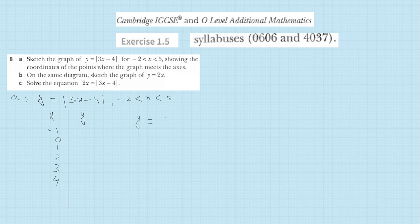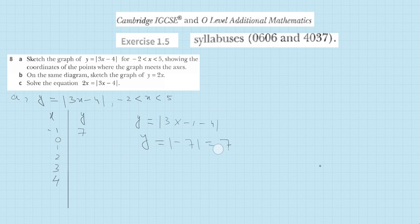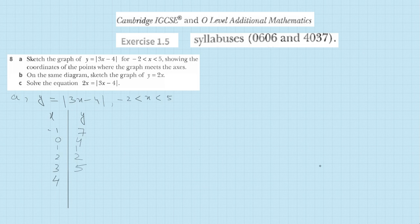First put x = −1: 3×(−1) − 4 = −3 − 4 = −7, and the absolute value of −7 is +7, so for x = −1, y = 7. Put x = 0: 3×0 − 4 = −4, and |−4| = 4. Put x = 1: 3 − 4 = −1, so y = 1. Then x = 2: 6 − 4 = 2. Then x = 3: 9 − 4 = 5. Finally x = 4: 12 − 4 = 8. This is our table of values. Now we draw the graph using these values.